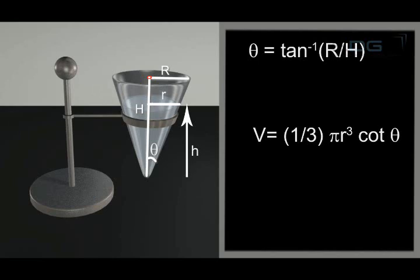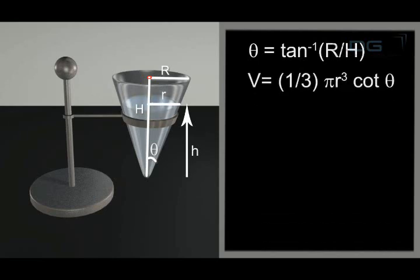Now let S equal surface area in contact with air at time t. That is equal to pi r squared. In the given problem, dV/dt is proportional to S.